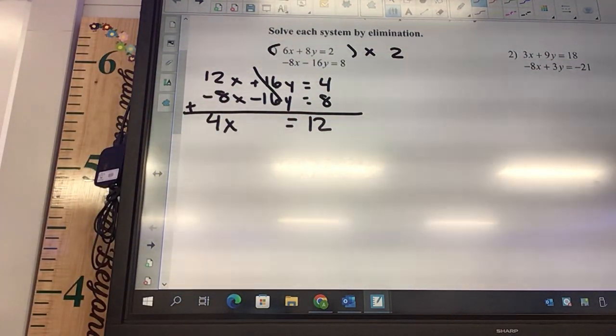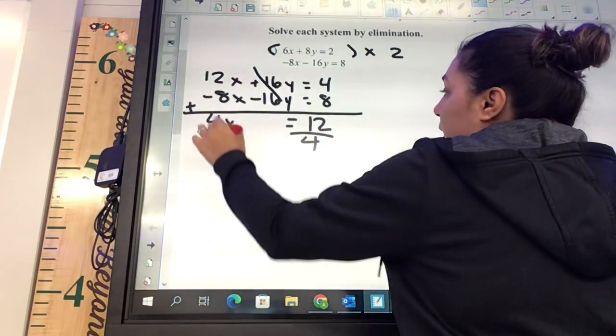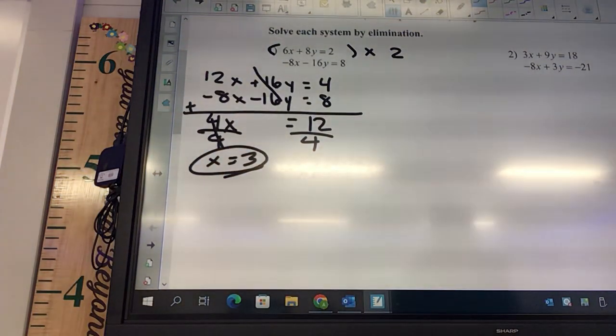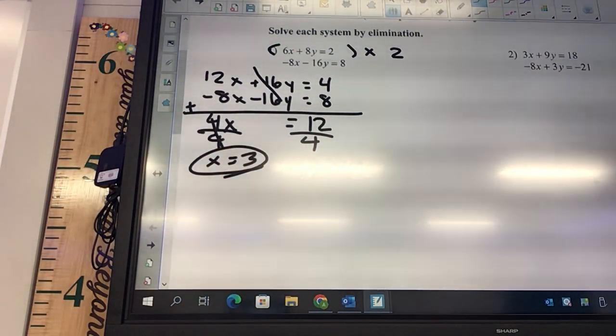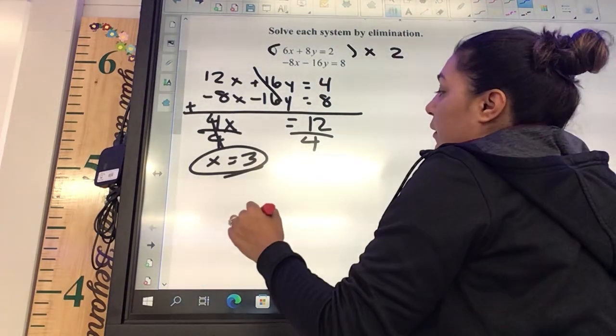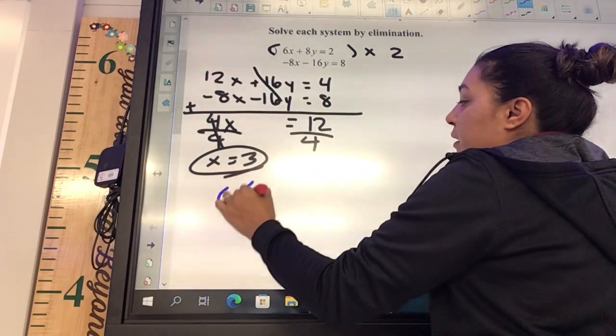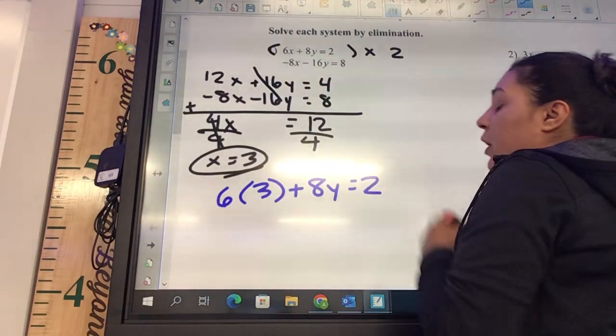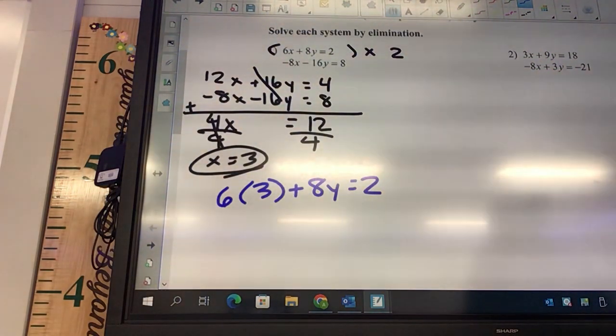Okay, and then what do we do with that? Divide by 4. And some of you guys need to be writing smaller, man. Your paper is all over the place. Okay, so we're going to get 3. Okay, where would you like to plug that into? Top or bottom? Top. Okay, and what are we plugging in? The x. So it's going to be 6 times 3 plus 8y equals 2. We need to make sure we plug that into the original.